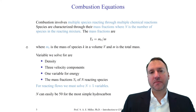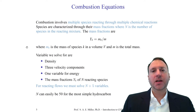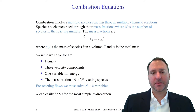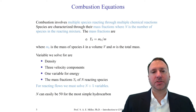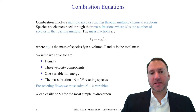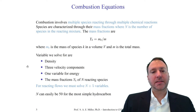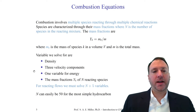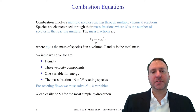Combustion involves multiple species which are reacting through multiple chemical reactions. We'll introduce the idea of a mass fraction y sub k, where n is the number of species of the reaction mixture. The mass fraction is the fraction in mass of a particular species k of the chemical reaction. Here m sub k will be the mass of species k in a particular volume. We're still solving for the density, the three velocity components, and one energy term — you'll recognize these as the Navier-Stokes equations.